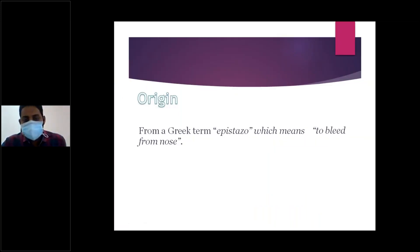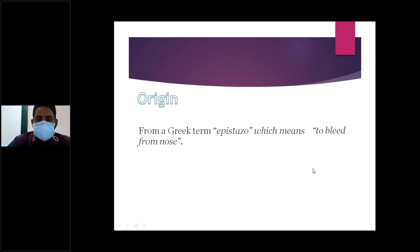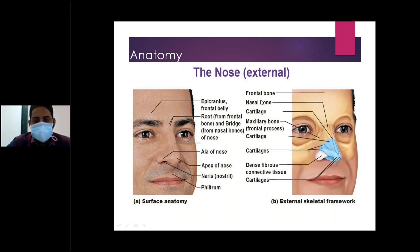The term epistaxis came from the Greek term 'epistazo', which means to bleed from the nose. So this anatomy of the nose may not be relevant now, but there are two points I want to depict.